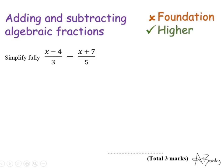My first example here is simplify fully x minus 4 over 3 minus x plus 7 over 5. When we don't have algebra on the denominators, here we only have integers, it is generally easier. So as I would with adding and subtracting fractions, the first thing I'm going to do is find a common denominator.